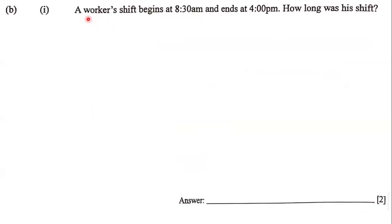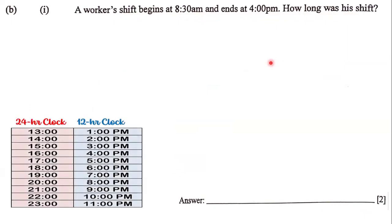The next question states that a worker's shift begins at 8:30 and ends at 4 p.m. How long was his shift? In order to figure out how long his shift was, we are going to subtract. But first, we're going to take 4 p.m. and express that using the 24-hour clock. So 4 p.m. is actually 16 o'clock in the 24-hour clock. Instead of writing 4 p.m., we're going to use 16 o'clock.